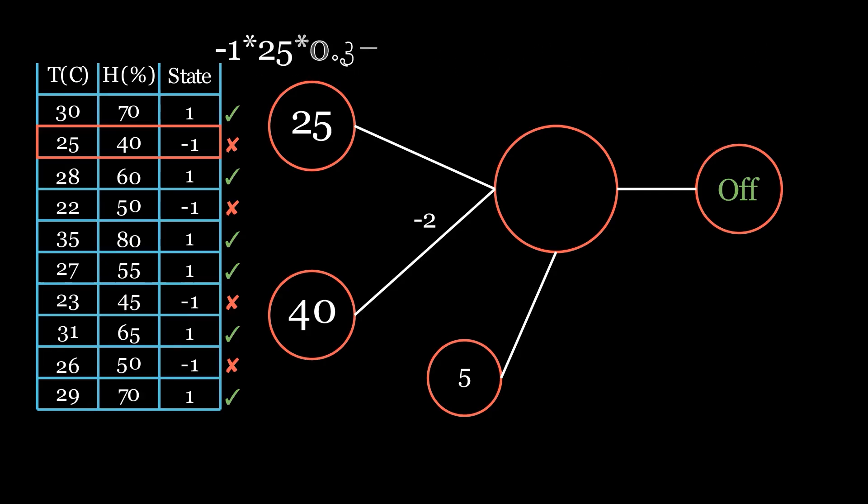Then we add the output of this operation to our weight. Now let's do the same thing with the second weight, but with value from our second neuron. Now let's adjust our bias. We simply need to multiply the correct answer by our learning rate and add it to the bias. And that's it. We trained our model. Or did we? Let's run our data through the model again.